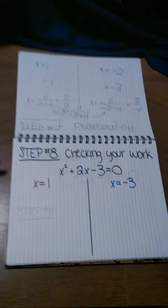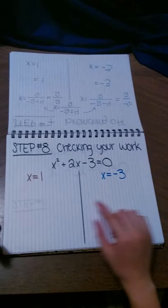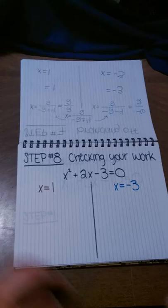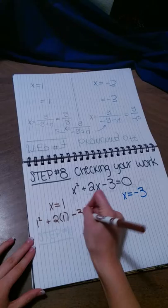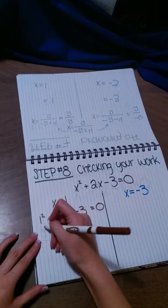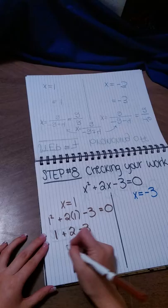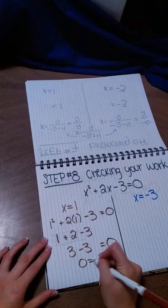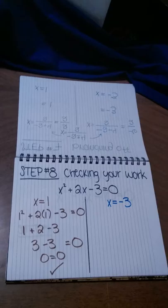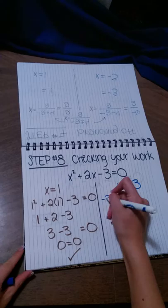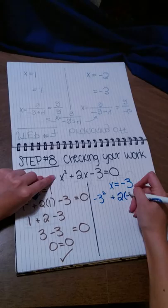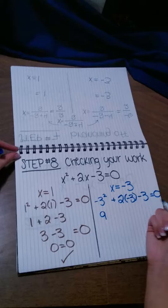A lot of people would think they're finished after this point, but it's also really important to check your work, because it doesn't always work out. Sometimes you'll put x back into your equation and you won't get 0 equals 0 — you'll get something weird like 2 equals 1, and that's obviously not right. So it's really important to put your numbers back into the original equation, which in this case was x squared plus 2x minus 3 equals 0. For the first one, we'd have 1 squared plus 2 times 1 minus 3. So 1 plus 2 minus 3 equals 0, and we ended up with 0 equals 0 — that checks out.